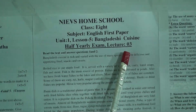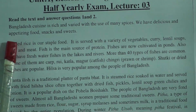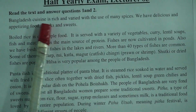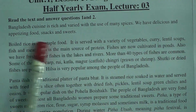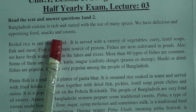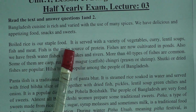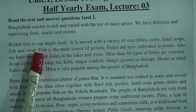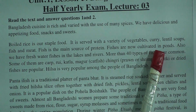We'll discuss today Unit 1, Lesson 5 on Bangladeshi cuisine. Read the text and answer questions one and two. Bangladeshi cuisine is rich and varied with the use of many spices. We have delicious and appetizing food, snacks, and sweets — appetizing means attractive. Boiled rice is a staple food, served with a variety of vegetables, curry, lentil soups, fish, and meat. Fish is the main source of protein and is now cultivated in ponds.